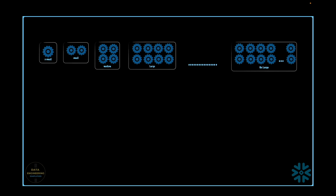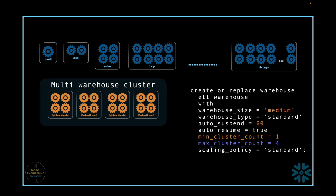In multi-cluster virtual warehouse, the primary purpose is to handle concurrency and not to handle a heavy workload. Let's say we create a multi-cluster virtual warehouse — as per this SQL definition, it's a medium-sized compute which means it has 4 nodes per cluster, and initially the cluster count is 1 and it can go up to 4 clusters.